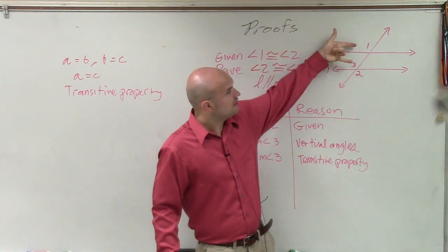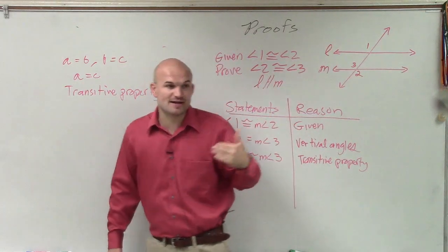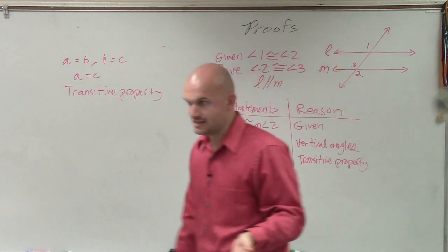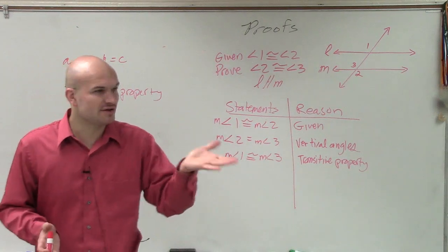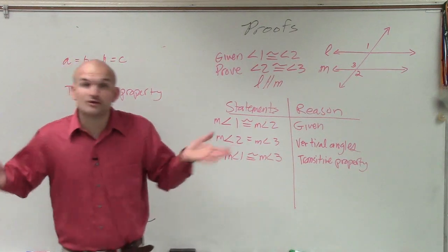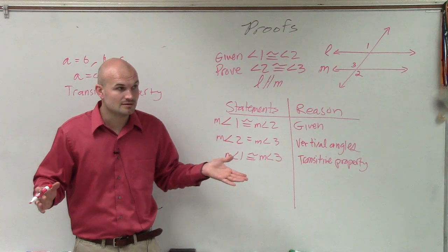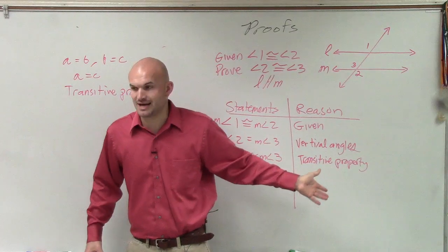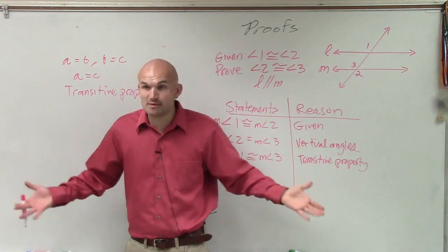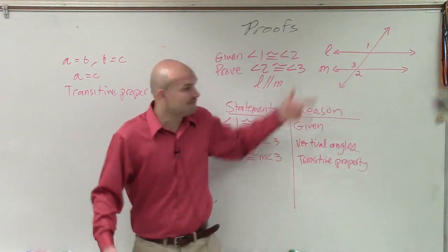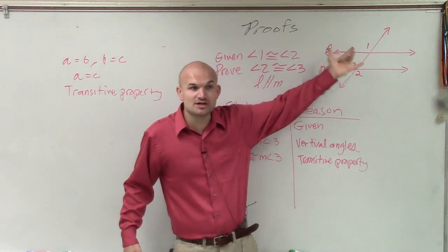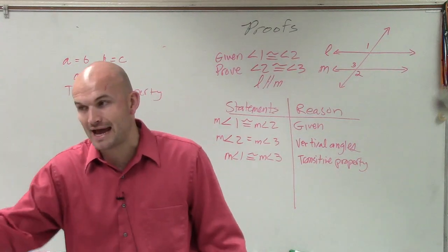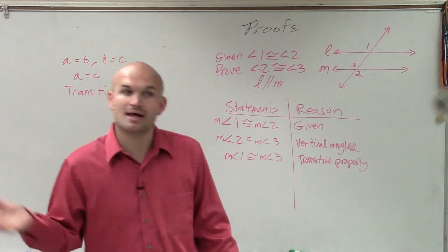So therefore, measure of angle one and measure of angle three, we know those are equal to each other. And what type of angles are those? Corresponding. They're corresponding angles, right? So if you have corresponding angles that are equal in measure, what does that tell you about the lines? The lines have to be parallel. If you have corresponding angles that are equal in measure, then you have to have parallel lines.